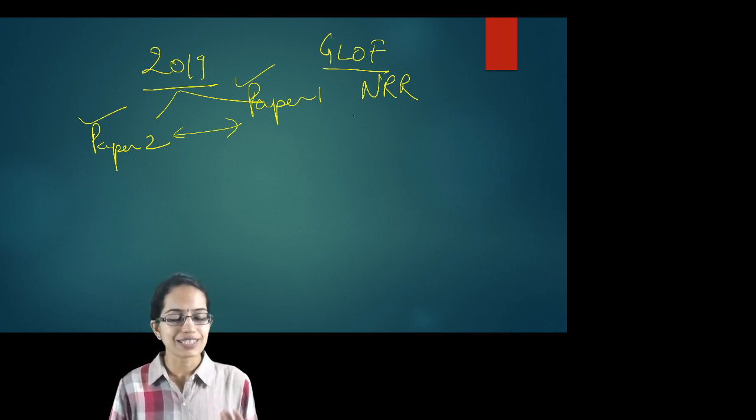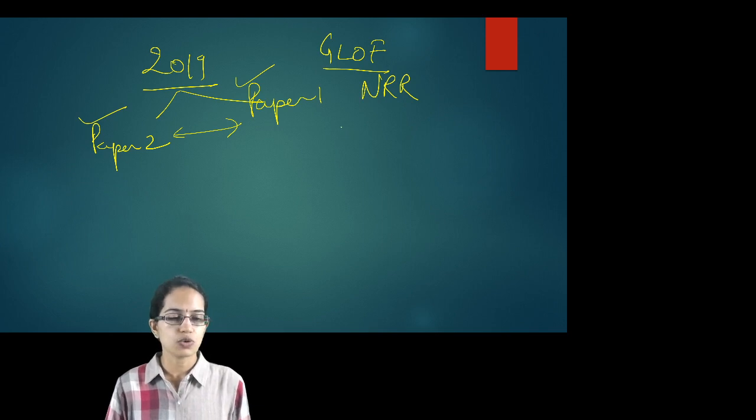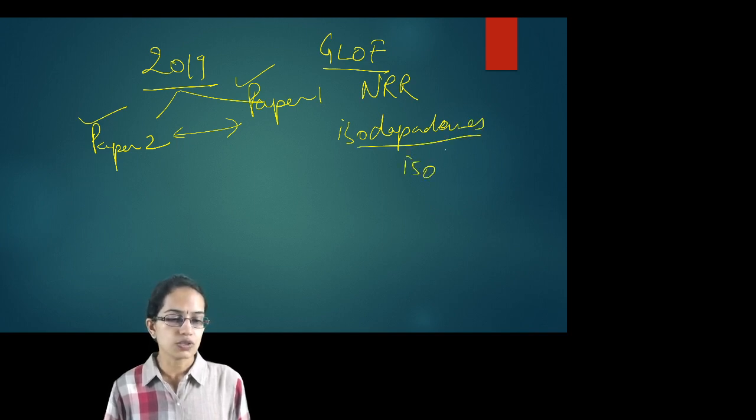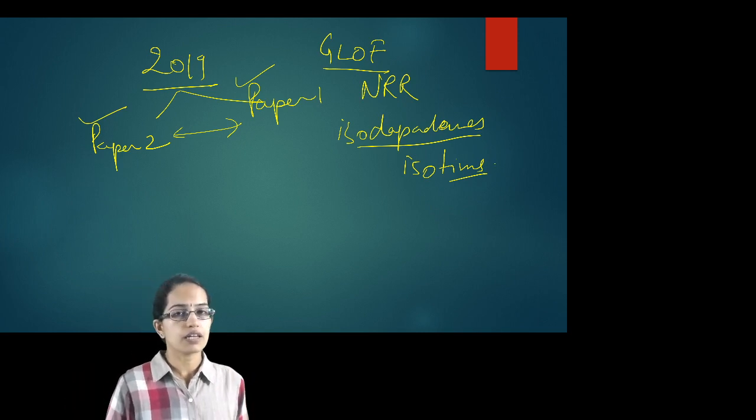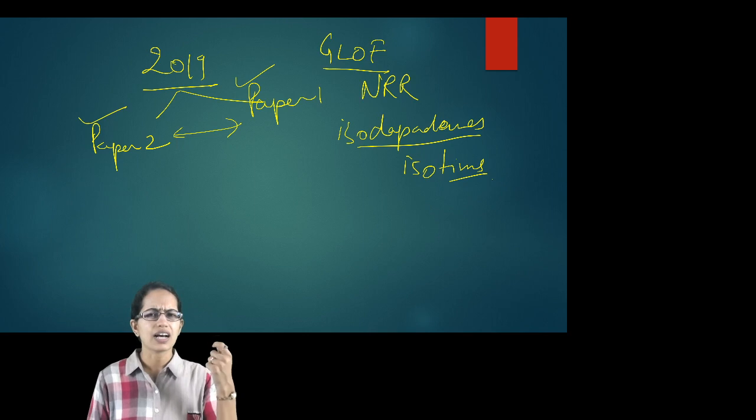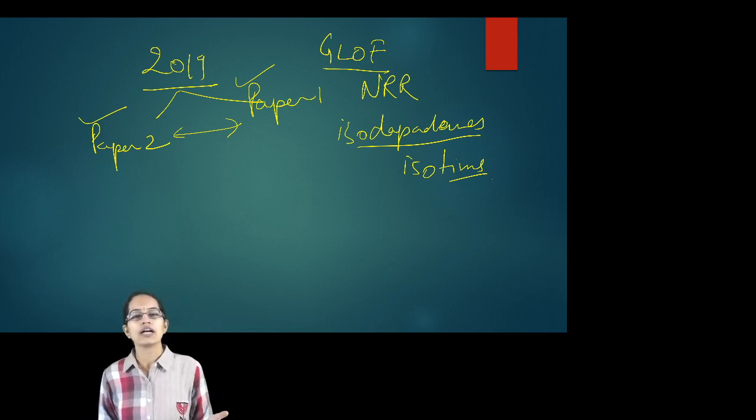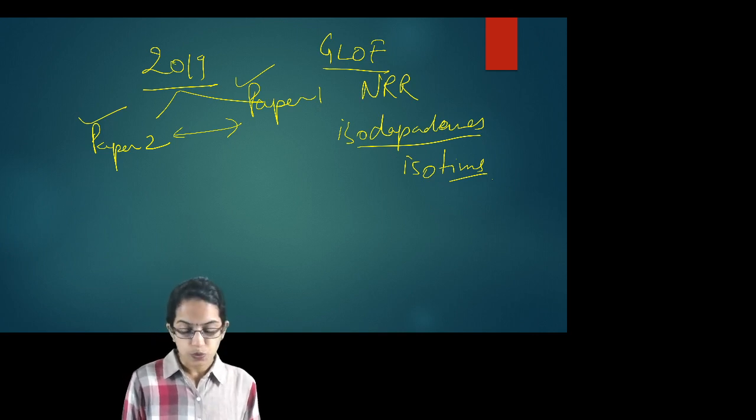Besides that, we have theories every time. This time again there was theory for the mentioning of isotepines where they were talking about the difference between isotepines and isotems. Talking about Weber's location model, talking about rimland theory, very important classic concepts that are asked each and every time, talking about their contemporary applications. Similarly, if we come on to paper 2, there were the important issues as we discussed.